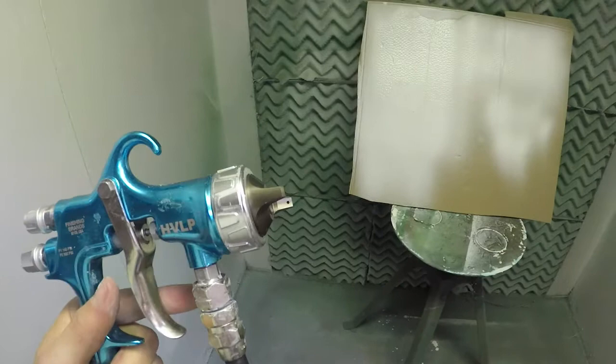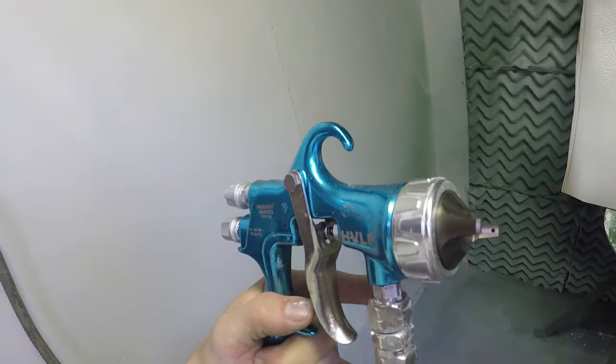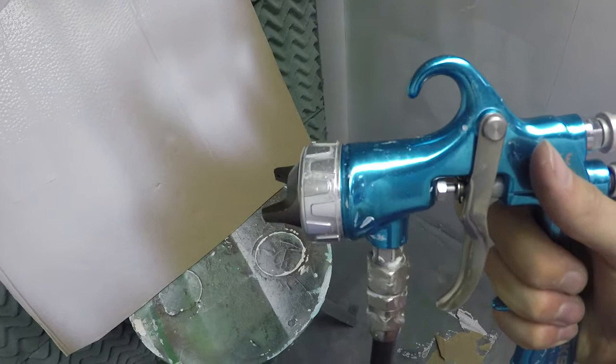So you can switch this gun from shooting a light to thin material that you might use HVLP for, and then in two, three seconds, change out an air cap, and you're in conventional spray. So you can spray anything that's thick, even a zinc coating. There's up to three air caps that come available for this for a variety of material thicknesses and spray patterns.